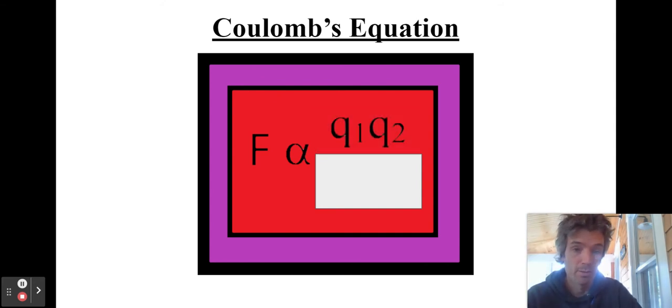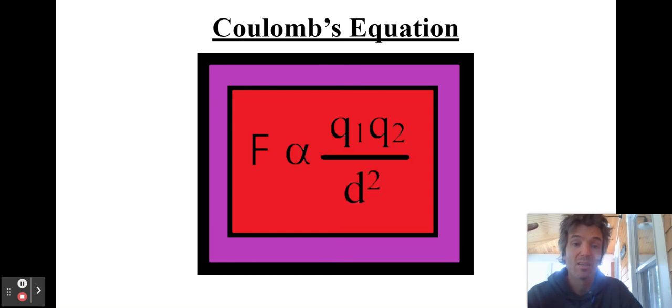And it's inversely proportional to the distance. Therefore, the distance is in the denominator. And the distance is squared in this scenario. The Q1 and Q2 are the two different charges.